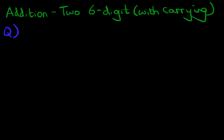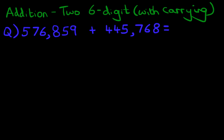What is 576,859 plus 445,768? Large numbers, aren't they?